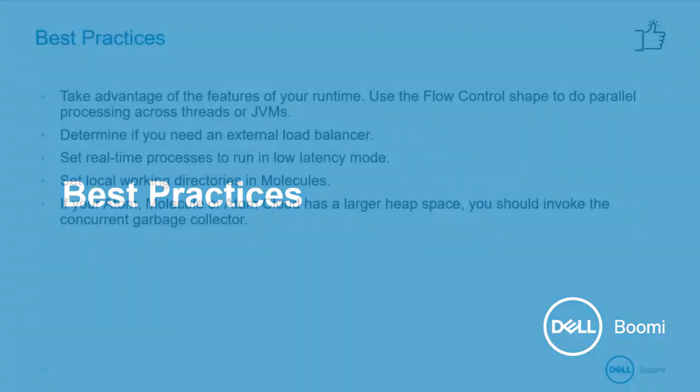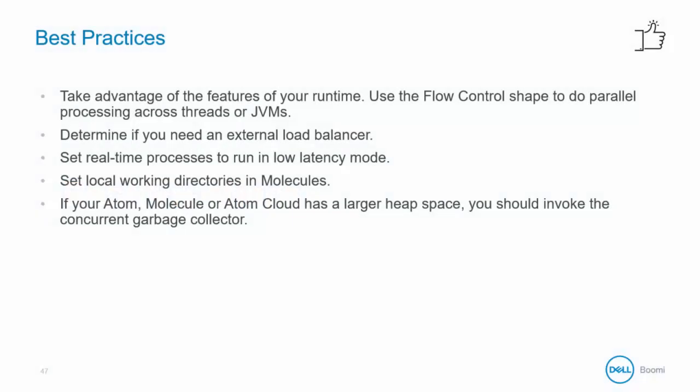Let's review some best practices. Think of ways to best use the flow control shape to do parallel processing on threads and JVMs to make the most use of system resources. Make use of a load balancer where necessary. We always recommend real-time processes run in low latency mode, and if you are running in a cloud, we always recommend running on atom workers. Set local working directories through atom management to reduce the amount of data written to your network file share. If you have a large heap space, invoke the garbage collector in Java settings, especially if you have tight performance requirements. For clustered environments, whether a molecule or a cloud, we recommend monitoring your runtime using JMX to monitor the JVMs running in your environment.